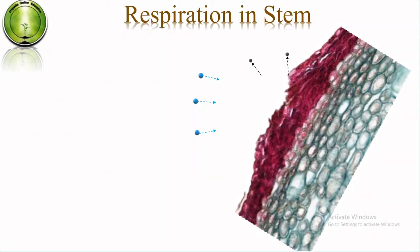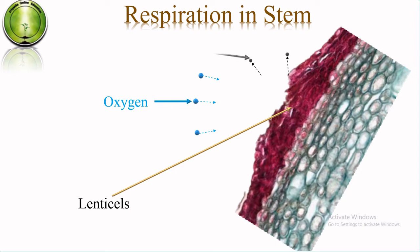In hard or woody stems, stomata are absent; lenticels are found on the outer surface. Oxygen diffuses through lenticels into the inner cells of the stem, and carbon dioxide produced by respiration diffuses out through lenticels. As seen in the diagram, the outer surface of the stem has bark or dead cells with lenticels in between. These lenticels receive atmospheric oxygen and release carbon dioxide after respiration. In herbaceous plants, respiration occurs through stomata; in hard and woody plants, through lenticels.